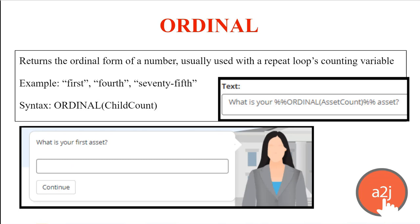Ordinal returns the ordinal form of a number and is usually used with a repeat loop's counting variable. So if you want to return 1st, 2nd, 5th, 714th — whatever the ordinal version of the number is — you can do that by using ordinal(child count). There's no bracket around 'child count' in the syntax example because it's one word. You only need the brackets when you have a space in your variable name.